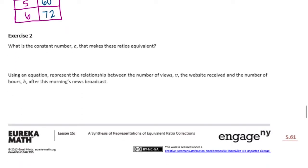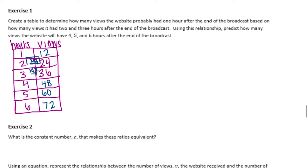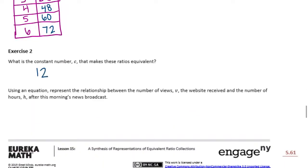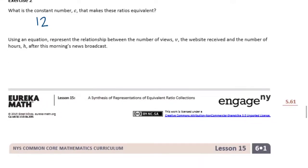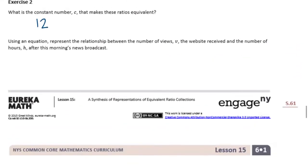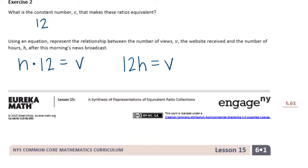Exercise 2 wants to know what is the constant number C that makes these ratios equivalent — basically, what were we multiplying by here? And that would be 12. The constant number is 12. Every one hour, there are 12 views. Using an equation, represent the relationship between the number of views V the website received and the number of hours H after the morning news broadcast. We know that the number of hours times 12 is equal to the views, or we could write it as 12 times H — 12H — is equal to the views. Two different ways to represent that.